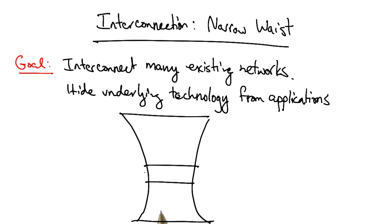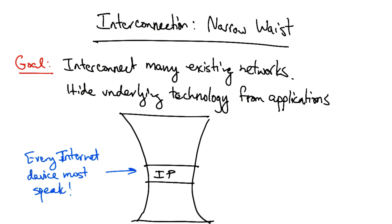The internet architecture has many protocols that are layered on top of one another. At the center is an interconnection protocol called IP, or the Internet Protocol. Every internet device must speak IP, or have an IP stack. Given that a device implements the IP stack, it can connect to the internet. This layer of the network is sometimes called the network layer.